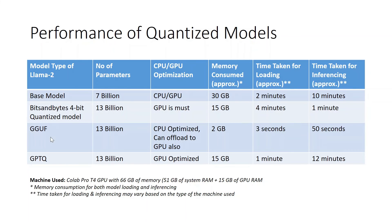Next, we tried loading the 13 billion model in GGUF 4-bit quantized format. Remember that GGUF is an extended version of GGML, optimized for CPU usage, while a few layers can be offloaded onto GPU. It consumed just 2GB of CPU memory, and thanks to the lightweight of the GGUF format, it took just 3 seconds to load the model and roughly 50 seconds for inferencing. Next is the GPTQ format of the same model, which is optimized for GPU usage — it consumed 15GB of memory with 1 minute loading time and 12 minutes inferencing time. Overall, the GGUF models are quite performant compared to any other model format. So in order to have a small memory footprint and faster inferences, it is advised to convert a base or fine-tuned model into GGUF format, though there is a small to negligible drop in quality.